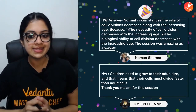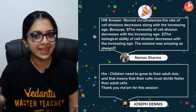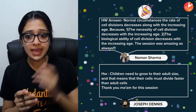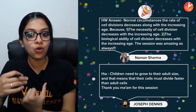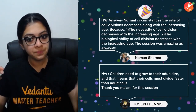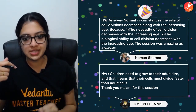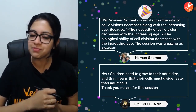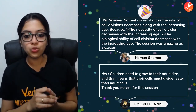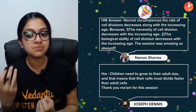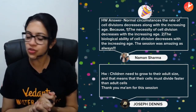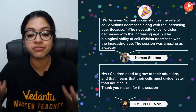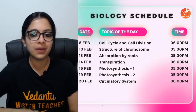I received a lot of answers. Naman Sharma and Joseph Dennis — their answers have been put up here. Naman says the rate of cell division decreases with increasing age because the necessity and biological ability of cell division decrease with age. Joseph says children need to grow to their adult size and that means their cells must divide faster than adult cells. Thank you Naman, Joseph, and all other children who took time to answer.